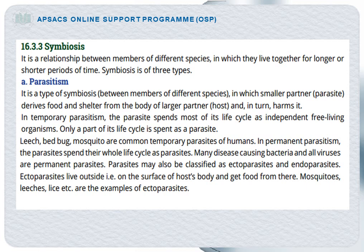The next interaction is symbiosis. Symbiosis is a relationship between members of different species in which they live together for a longer or shorter period of time. Symbiosis is of three types: parasitism, mutualism, and commensalism. Parasitism can be defined as a type of symbiosis in which the small partner derives food and shelter from the body of the large partner and in turn harms it. The small partner is known as the parasite and the large partner is known as the host. The parasite lives on the body of the host, gets its nourishment and shelter, and in turn harms it.